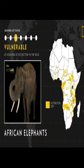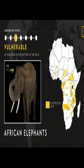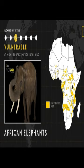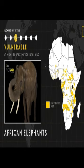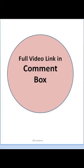The African elephant has two species: one is the Savannah elephant, also known as the bush elephant, and the other is the forest elephant.